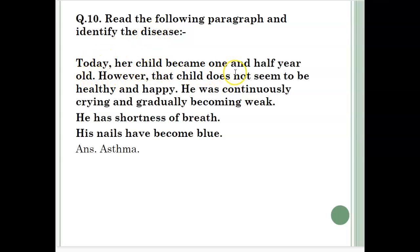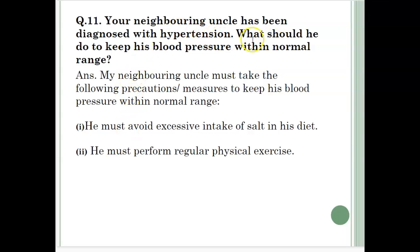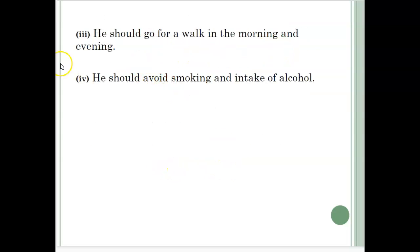Read the following paragraph and identify the disease. A child of one and a half years does not seem healthy and happy — continuously crying and gradually becoming weak, with shortness of breath and nails that have become blue. So he is suffering from asthma. Your neighboring uncle has been diagnosed with hypertension. He must avoid excessive intake of salt in his diet, perform regular physical exercise, go for a walk in the morning and evening, and avoid smoking and intake of alcohol.